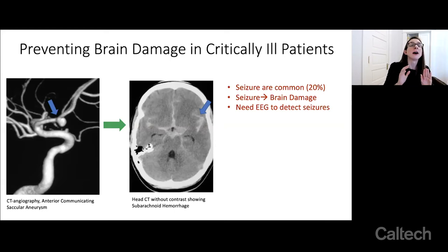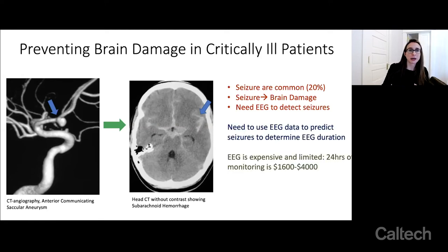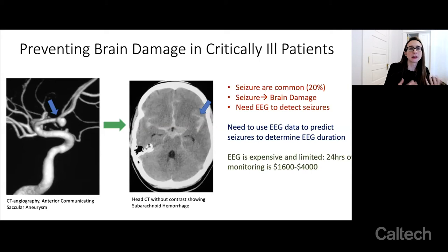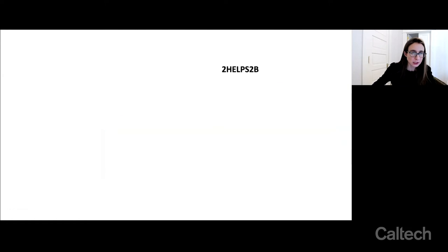A major problem with detecting these seizures is that EEG monitors are in scarce supply. They often don't have enough monitors to go around, or people to read the monitors. The monitors stay too long on some people and not long enough on others. Allocation of these monitors is really important, so we need to be able to predict these seizures in advance to know who should get monitoring.